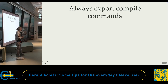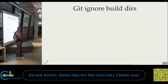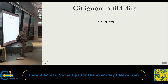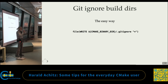Always export compile commands. Even if you don't use it, just put it there — somebody else will happily use it. I mention it because there are people that don't put it there. Also, git-ignore build directories — the easy way is to write a file in the current build directory that says 'git ignore everything in this directory,' and you don't have to mess around with .gitignore files. You won't accidentally add the whole debug build into the git tree anymore.